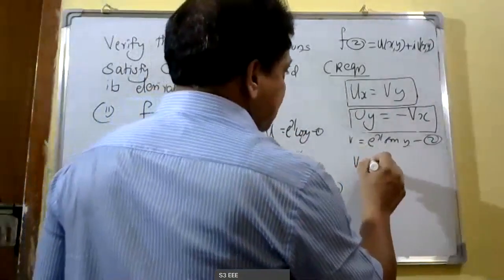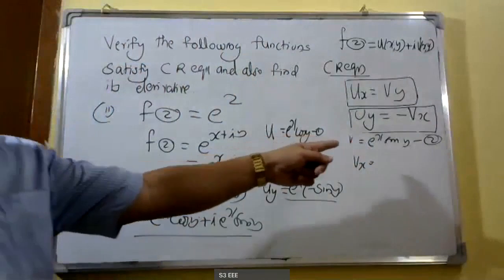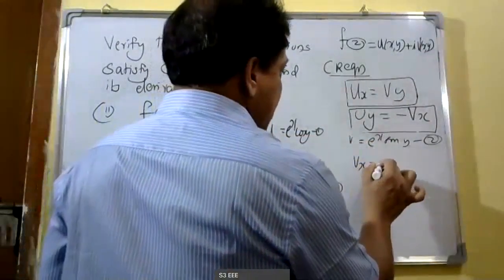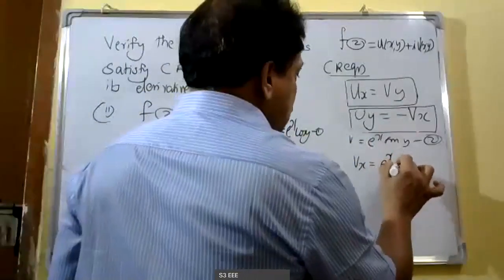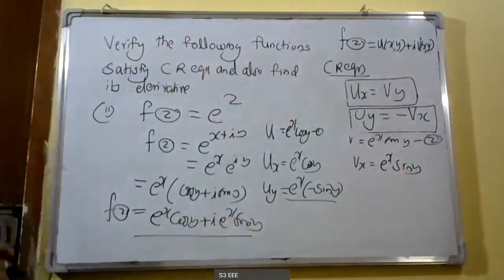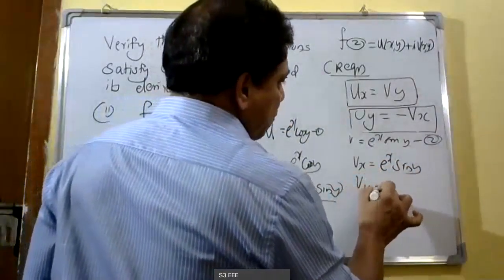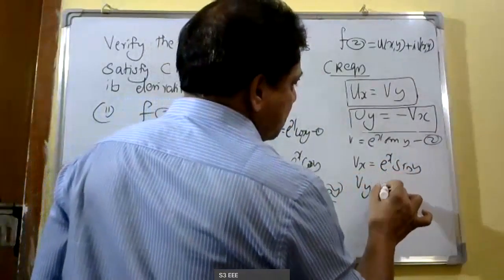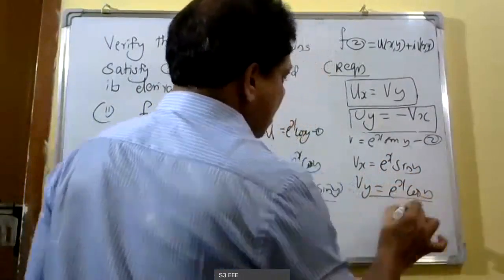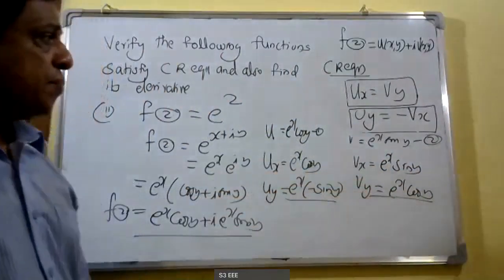Similarly, we find v_x by differentiating e raised to x sine y with respect to x. With respect to x, we get v_x equals e raised to x into sine y, since sine y is taken as constant. Then v_y: differentiating with respect to y, we get v_y equals e raised to x into cos y. These are the partial derivatives u_x, u_y, v_x, and v_y.